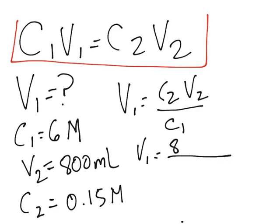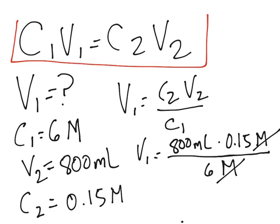So 800 milliliters is the volume 2, and C2 is 0.15 molar, and C1 is 6 molar. So the molars will cancel, and we'll get our result in milliliters. So we get 20 milliliters as the volume of the stock.